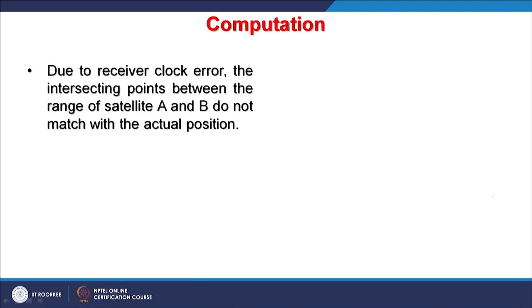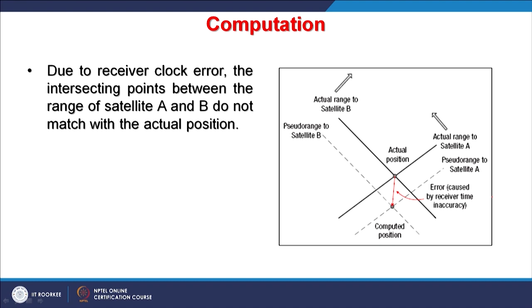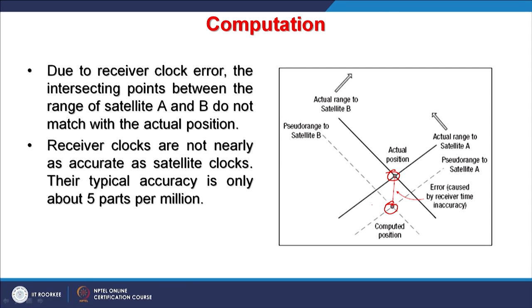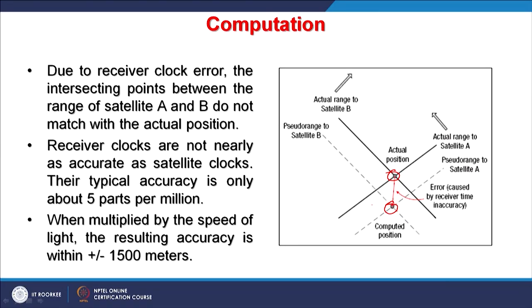Due to receiver clock error, the intersecting points between ranges of satellites A and B may not match the actual position. If this error is large, the computed position can be significantly displaced from the actual position. Receiver clocks are not nearly as accurate as satellite clocks — satellites have atomic clocks, while receivers have simple electronic clocks with typical accuracy of only about 5 parts per million. However, in a few seconds our clocks are synchronized with those satellite clocks. When multiplied by the speed of light, the resulting accuracy without correction is within ±1,500 meters.